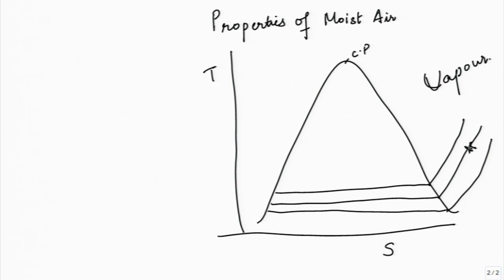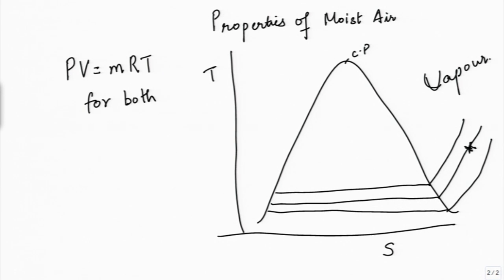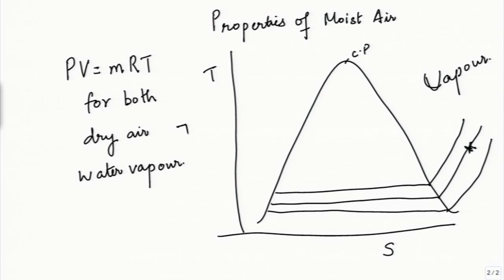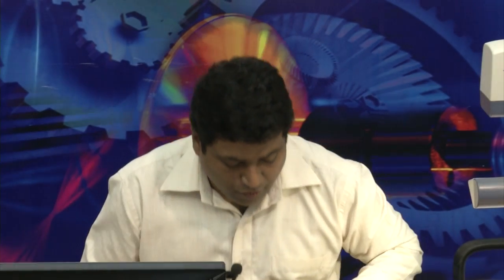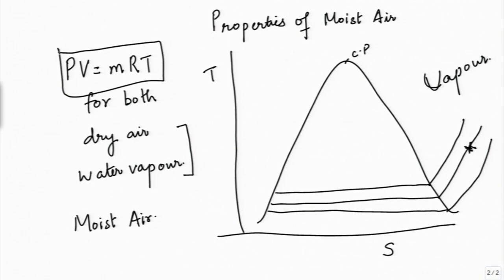Water vapor is at very low pressure and reasonably high temperature compared to its boiling point. Along with air it forms a good ideal gas mixture. Air at roughly one atmosphere can be considered as an ideal gas, and these two together can be thought of as a mixture of two ideal gases. We will apply the ideal gas equation PV = mRT for both dry air and water vapor.